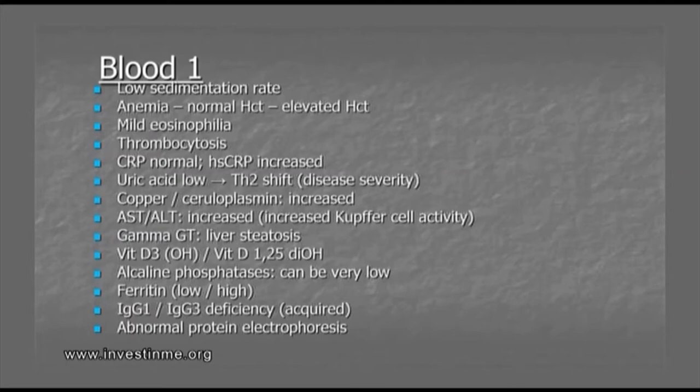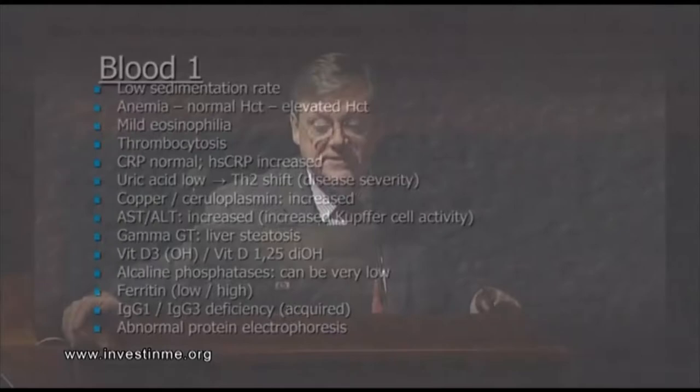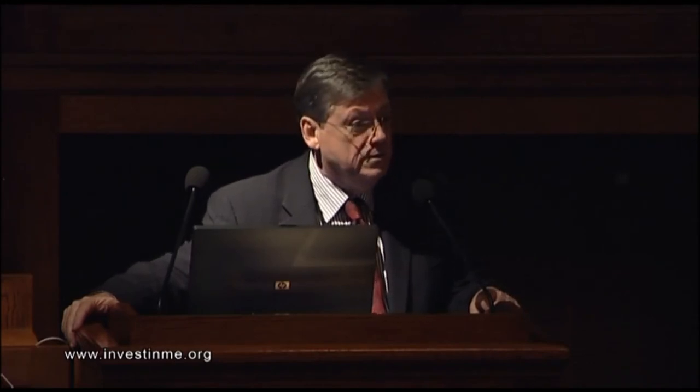Gamma-GT is often elevated, and patients are often told that they drink alcohol, although they don't tolerate alcohol. That's because of liver steatosis caused by fructose malabsorption — fructose malabsorption causes production of acetaldehyde, which is toxic alcohol. In fact, some CFS patients are effectively alcoholics because they make the alcohol themselves.